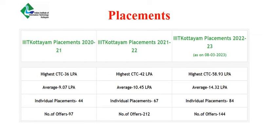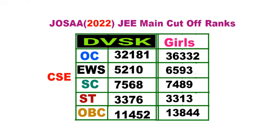This is institute code 8880 and it is a central government institution under public-private partnership. Last year's cutoff ranks for CSE: the OC category is 32,181 and the girls' quota is 36,332.